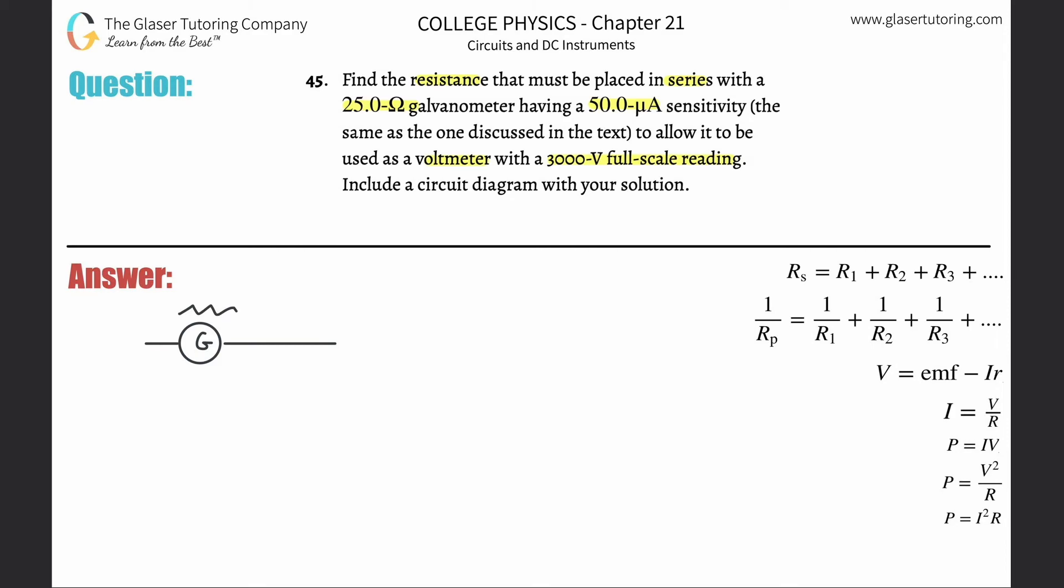But instead of showing that overlaid in the galvanometer, sometimes what we'll do is place it kind of in series with it like that. And then we realize we have another resistance.